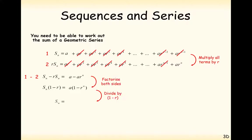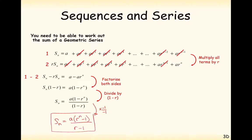Now let's factorise and rearrange. Factorising both sides and dividing by 1 minus r, the formula is a times (1 minus r to the power of n) over (1 minus r). If you multiply the top and bottom of the left-hand side by minus 1, the formula turns into a times (r to the n minus 1) over (r minus 1). This is the formula you can use to add up the terms in a geometric sequence.